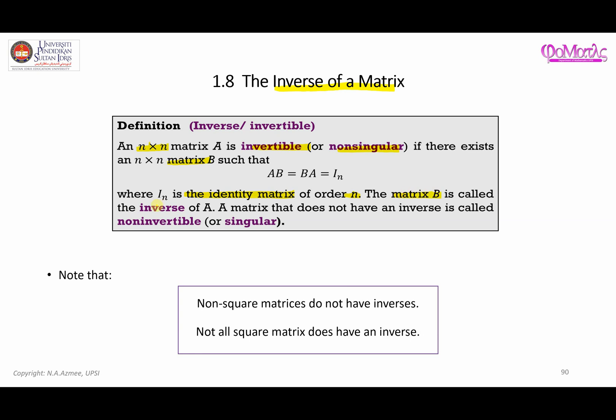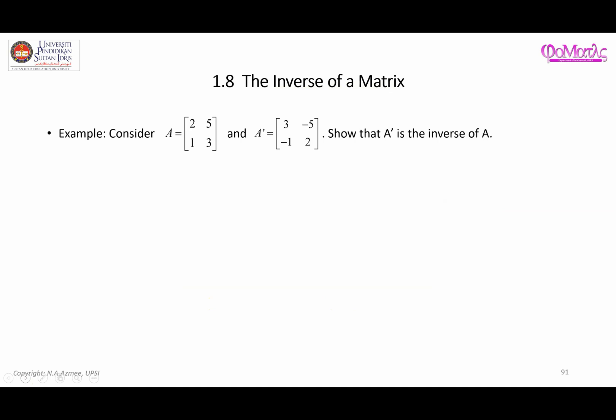If a matrix doesn't have an inverse, then that particular matrix is called non-invertible or singular. Something to note is that not all square matrices have an inverse, and non-square matrices do not have inverses.